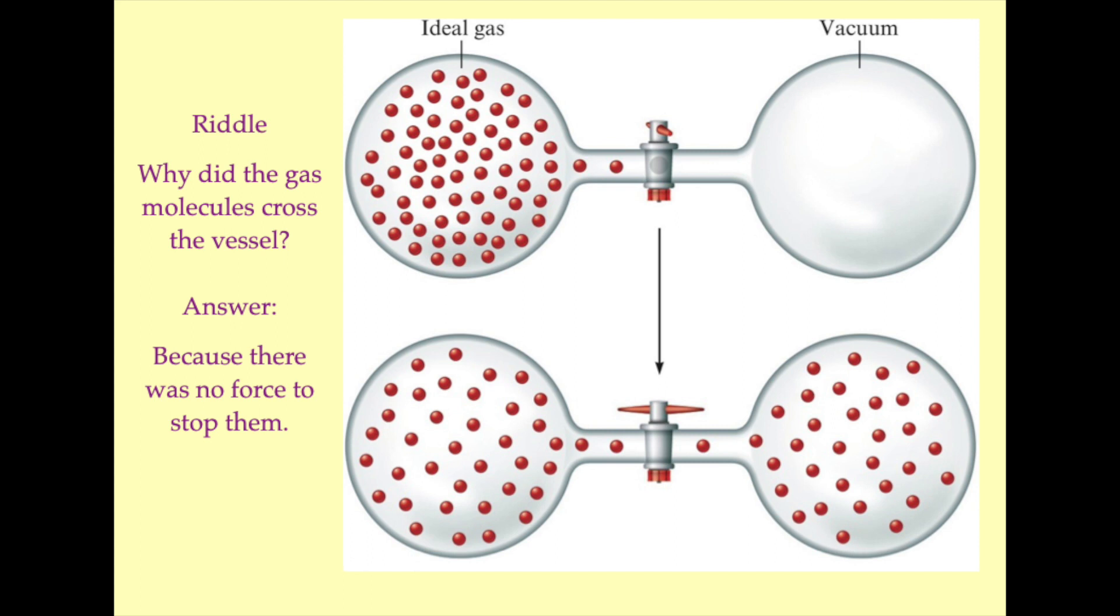So returning to the question of why it is that gas molecules moved from the left hand side of the vessel to the right hand side of the vessel, the answer is quite simple. There was just nothing to stop them from doing it. There was no force acting that would prevent it from happening.